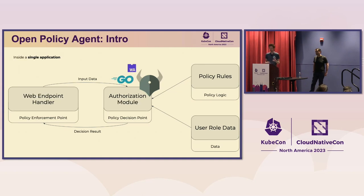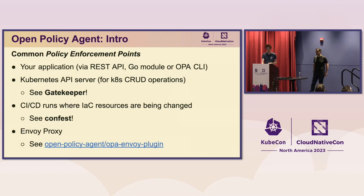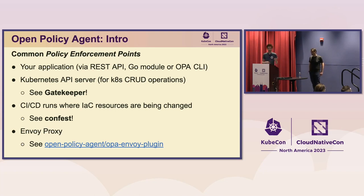You can also use OPA within an application to have much the same effect, where a module responsible for serving web requests makes a function call to an authorization module in the same program based on OPA. Common policy enforcement points include your application — receiving requests and working out whether they're allowed — and the Kubernetes API server.